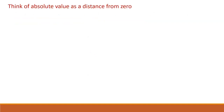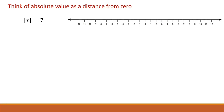Our second foundational idea has to do with the meaning of absolute value. We need to think of absolute value as a distance from zero. If we're asked to solve the absolute value of x equals 7, what we're being asked is what numbers are a distance of 7 from 0 on the number line. There are two numbers that are a distance of 7 from 0: negative 7 and positive 7. So the solution is x equals negative 7 or positive 7.